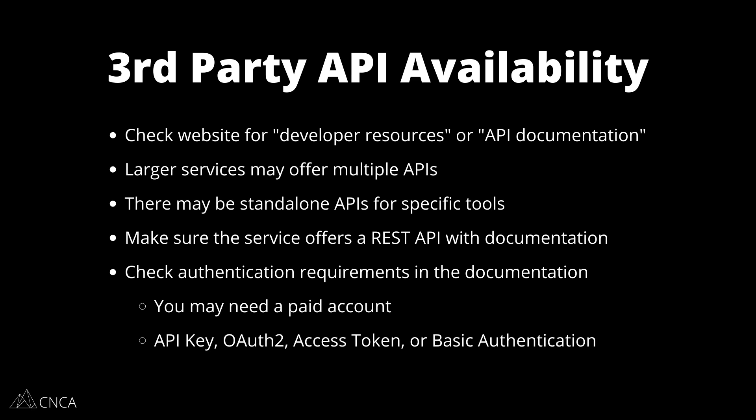Some services that are really large and have many different products may offer multiple APIs, one for each of their products. You'll see this with Amazon, Google, QuickBooks, and other larger companies. In some cases, the API you might want to connect to is a simple tool — so the tool itself is the API, and there's no other larger website or account that you need to create in order to get to it. We're going to take a look at a few examples so I can show you what I mean. There are some standalone services that all they do is offer an API and nothing more.